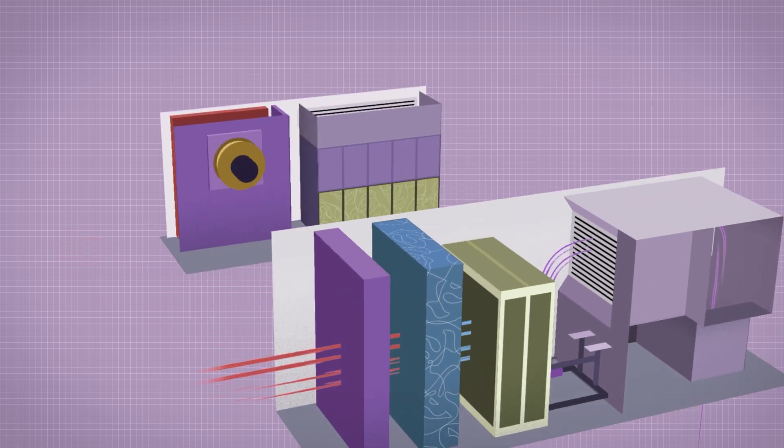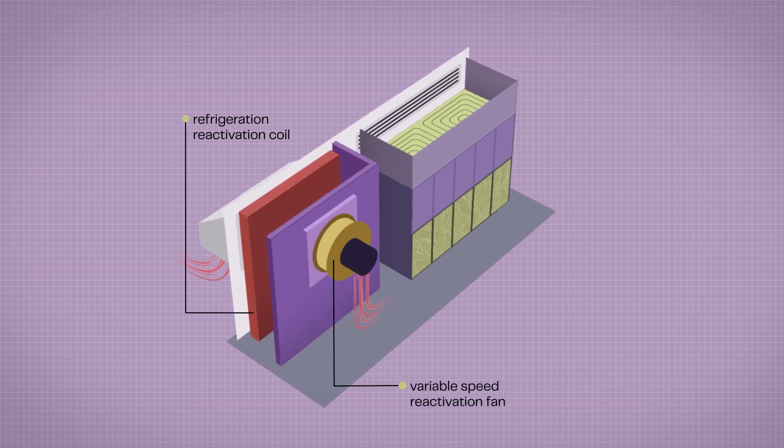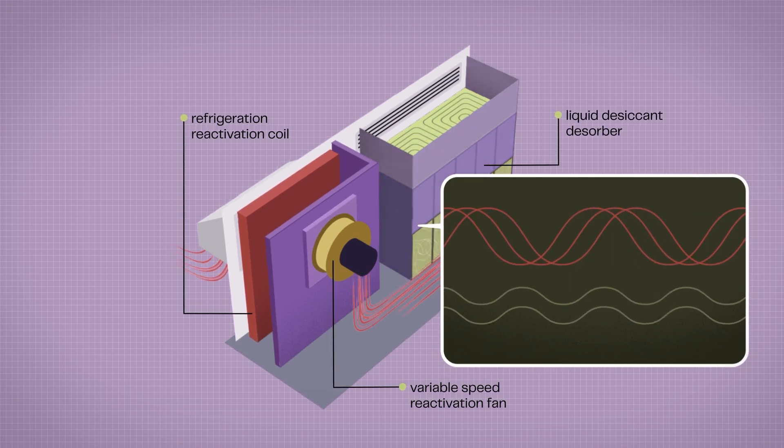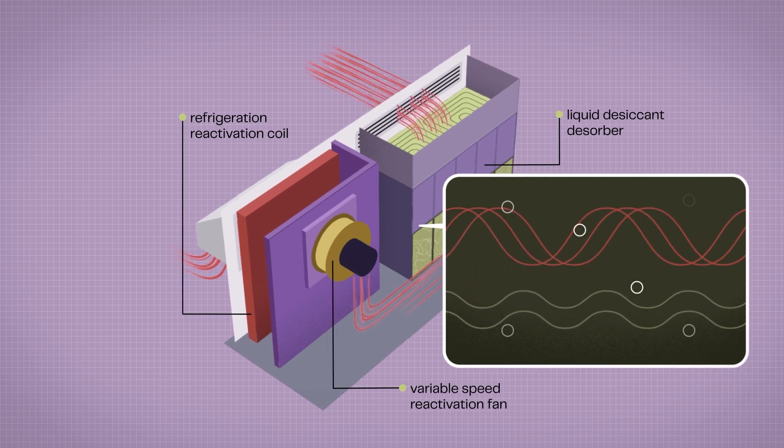This is the job of the regeneration air tunnel. Here, the unit uses the waste heat from the refrigeration system to heat incoming outdoor air. This hot air then enters the desorber, where water is evaporated out of the desiccant solution, returning to its original concentration.